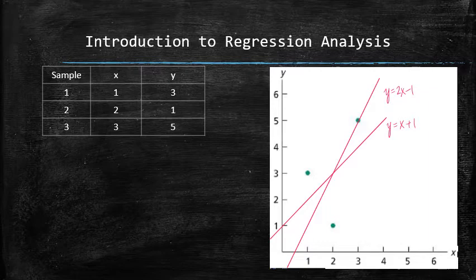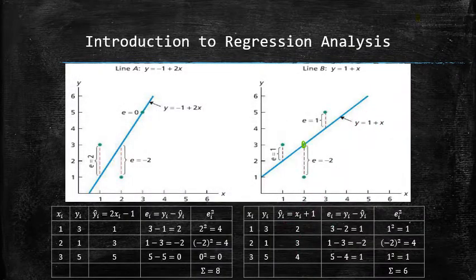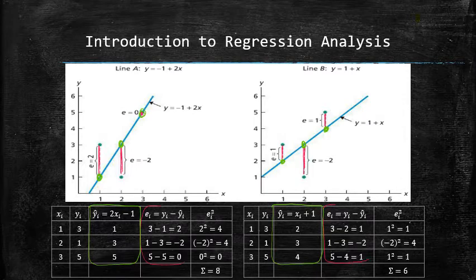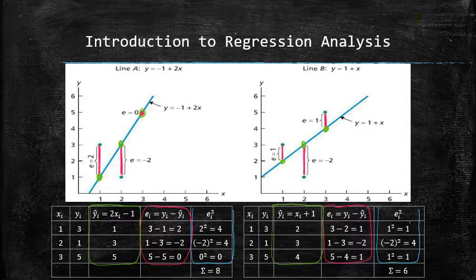Let's compute the fits of two different lines by finding the sum of squared errors for each line. For each input x_i, we find the predicted output y_i hat by evaluating the regression line for each input. Then we find the error by subtracting the predicted output from the actual output observed. Then we find the squared error by squaring the error.